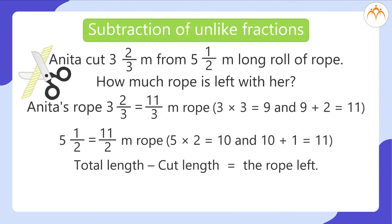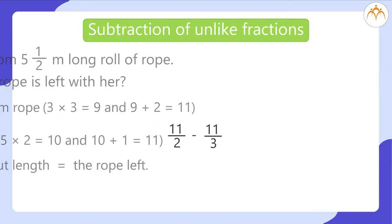Total length minus cut length is equal to the rope left. 11 by 2 minus 11 by 3.